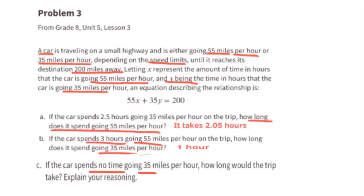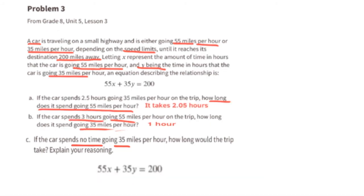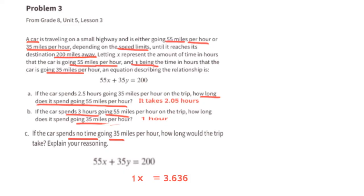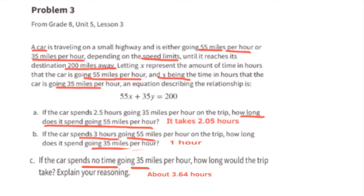Part C: if the car spends no time going 35 miles per hour, how long would the trip take? Starting with 55x plus 35y equals 200, substitute y with 0. The equation reads 55x equals 200. Dividing both sides by 55, x equals approximately 3.64 hours. So if the car was never traveling 35 miles per hour and only traveled 55 miles per hour, it would take 3.64 hours to travel 200 miles.